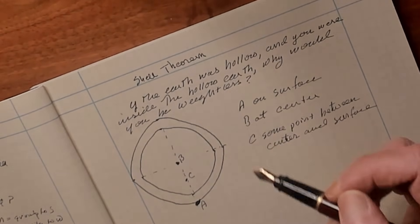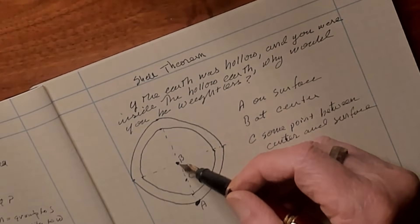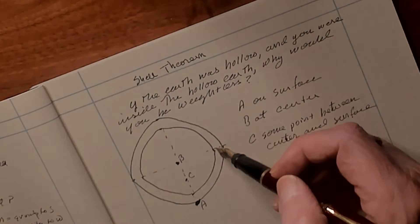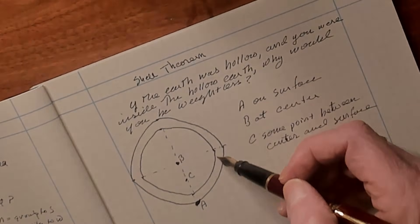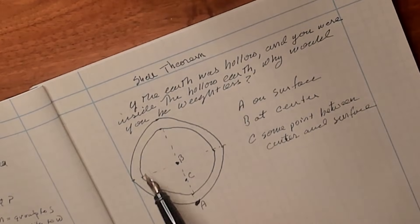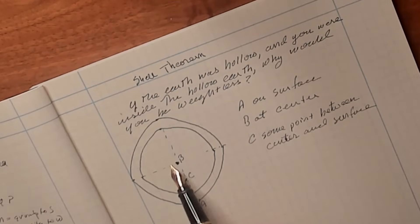But what if we were at the center of the earth at point B? Once again, all of the shell to the north would equal all of the shell to the south. So the forces going north and south would balance each other. Likewise, the west shell and the east shell would also balance each other and the pole would be equal and opposite in all directions. So we would be weightless at the center of the earth.